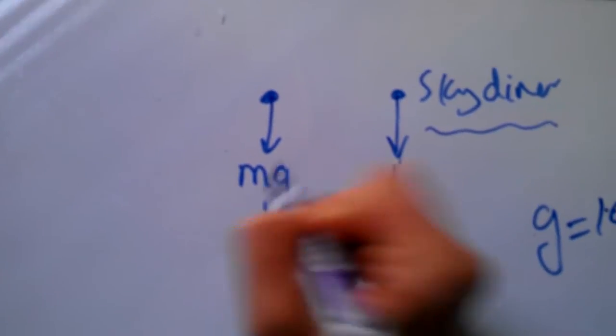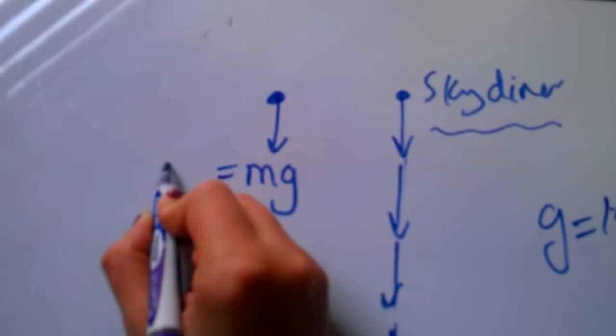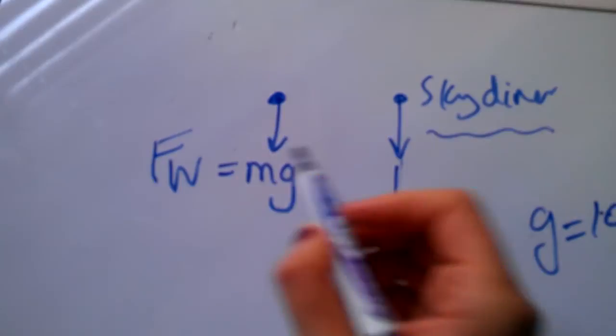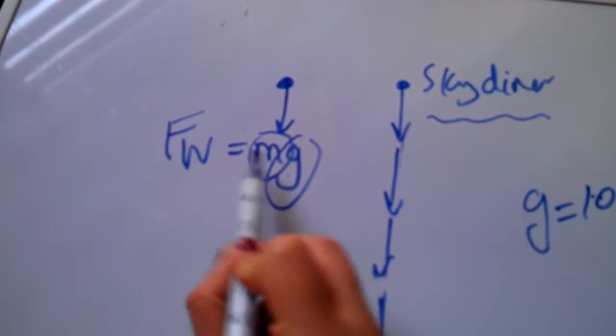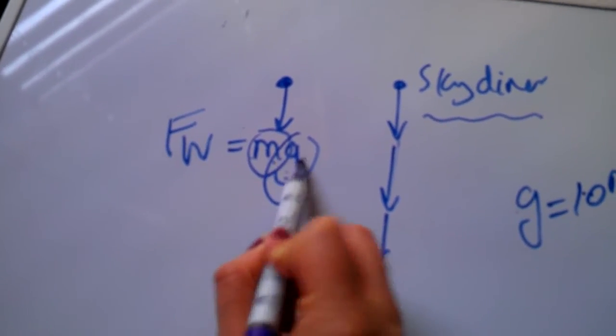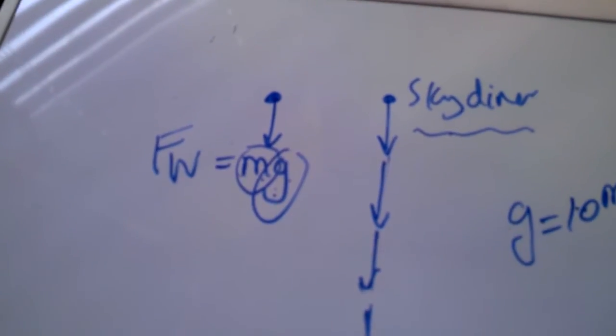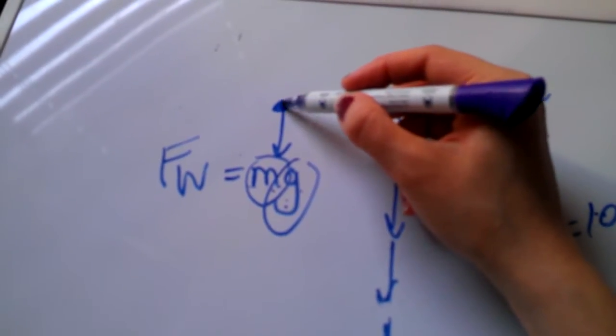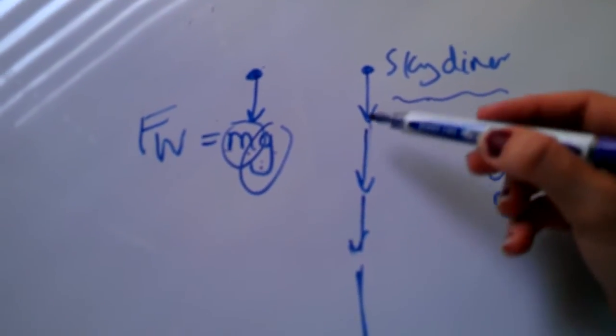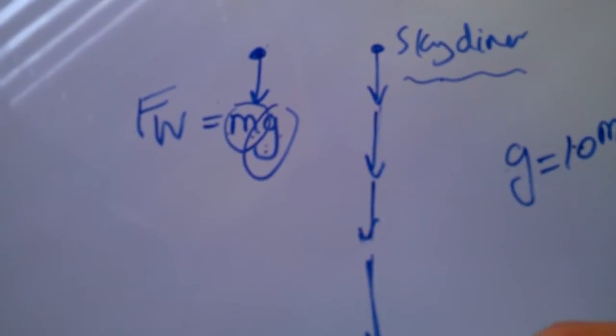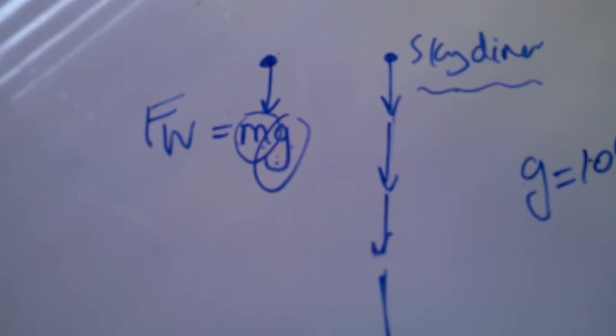However, the skydiver has one constant weight, because the mass for the skydiver stays the same, g stays the same. So mg, m times g for the skydiver stays the same. However, air resistance gets bigger and bigger as he falls down, because as he falls down the velocity gets bigger and bigger, hence air resistance force.